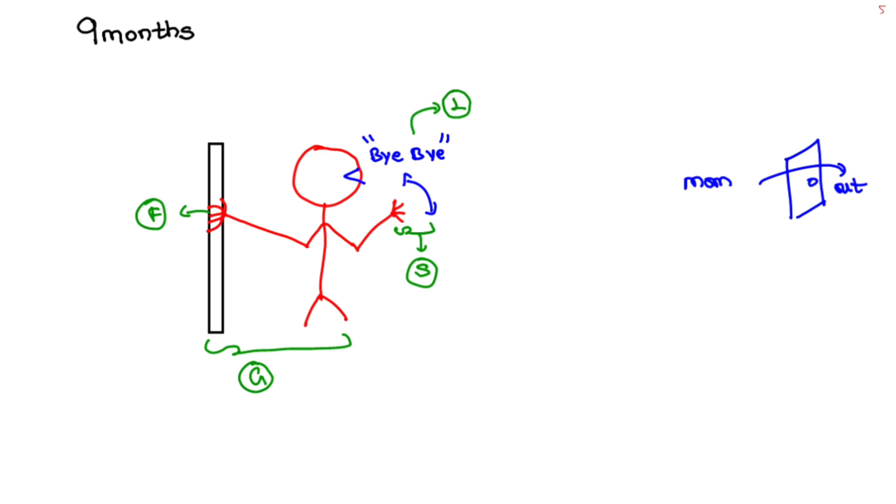Here, stands holding on is gross motor, immature pincer grasp is fine motor, waves bye bye is social event, and talking by syllables is language. Let's recap: a baby stands holding on with immature pincer grasp and waves bye bye at mother.